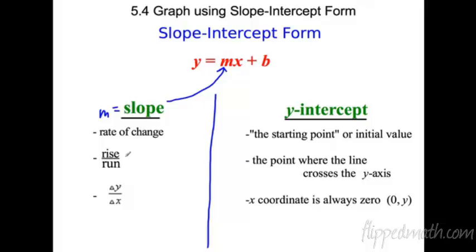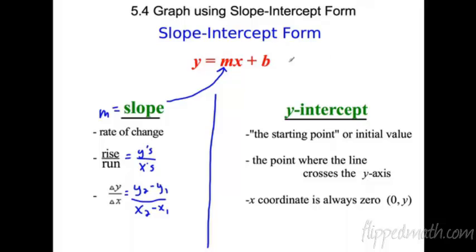Also think of slope as rise over run, and when I think rise over run I think about y's over x's. Rise sounds like y's. This delta triangle means change — it's the change in y over the change in x. We wrote that as the formula: subtract your y's over subtract your x's. Those are the things we need to know about slope; it's part of this formula we're going to keep using for a long time.